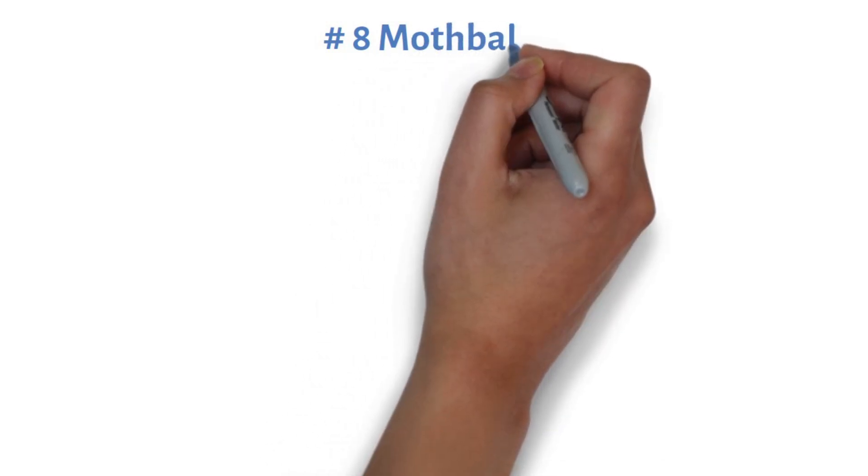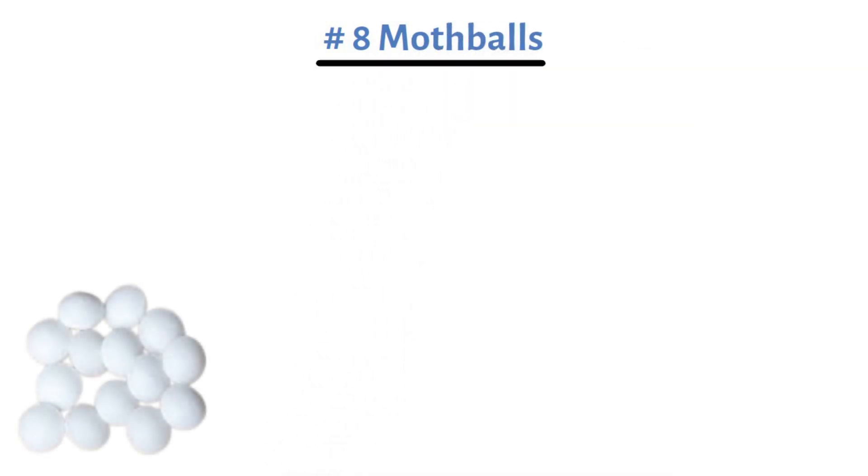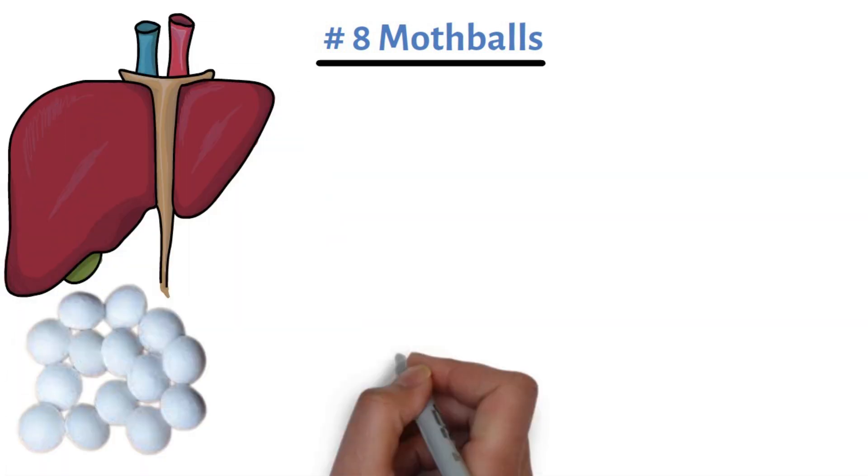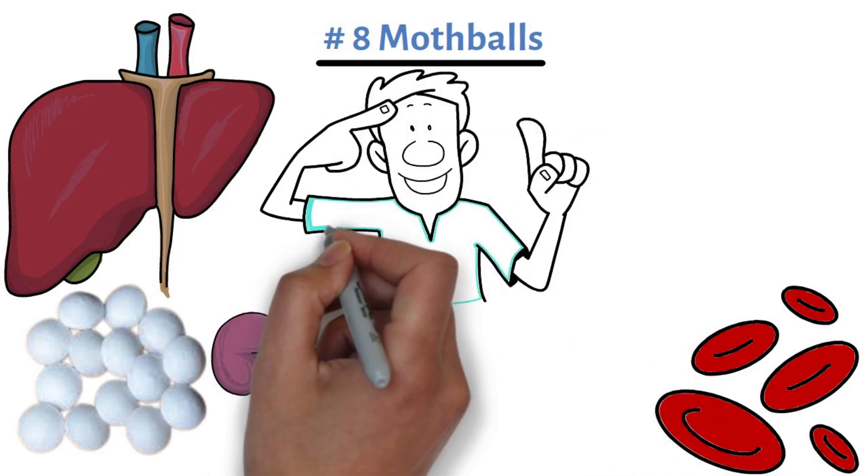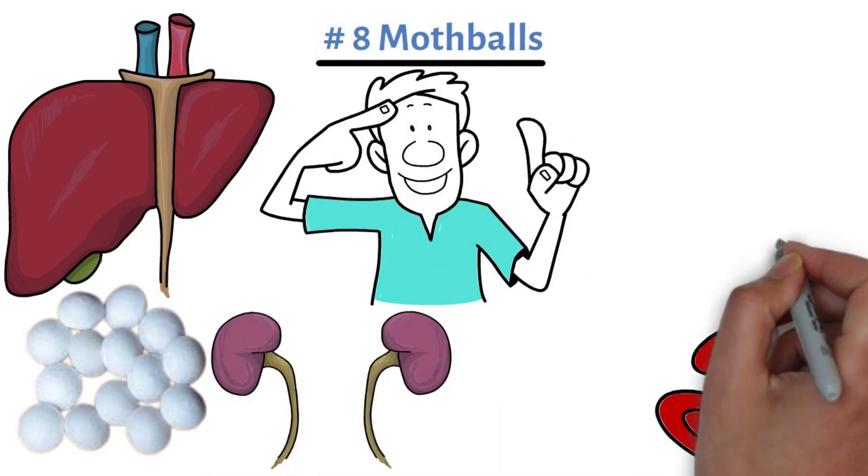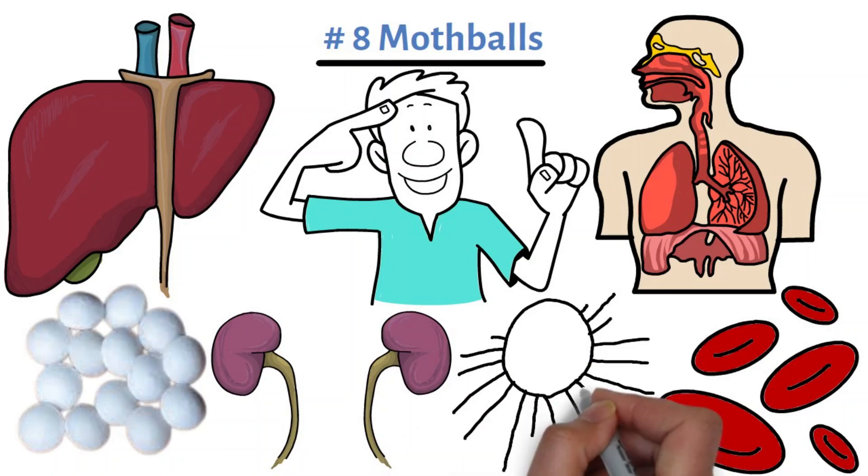Product number eight, mothballs. Mothballs contain naphthalene, a toxic chemical that can damage your liver and kidneys and destroy red blood cells. Naphthalene is also a known carcinogen and has been linked to respiratory issues and cancer in lab animals.